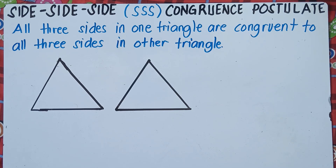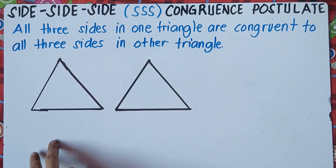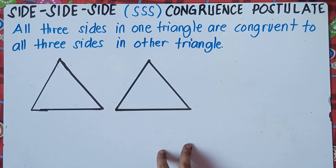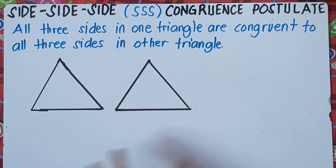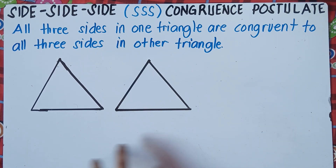The definition of the SSS postulate: all three sides in one triangle are congruent to all three sides in the other triangle. Once we prove that all three sides of the first triangle are the same as the other three sides of the second triangle, therefore the two triangles are congruent — any part of these two triangles, even the angles. That is the SSS postulate.